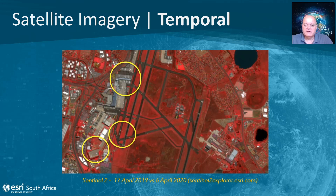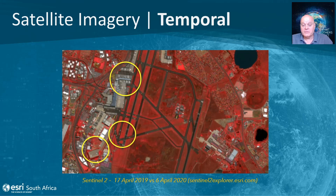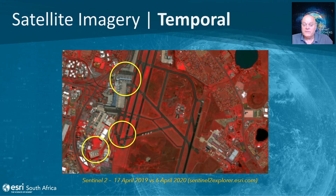Sentinel-2 data is served from the Esri ArcGIS Online Living Atlas of the World web services. You can access it through the Sentinel-2 Explorer tool or bring it directly into ArcGIS Pro. Here I'm showing an image from April last year in false color infrared: you can see planes highlighted in yellow circles at the terminal buildings and waiting at the end of the runway, versus April this year where very few planes are at the terminals and many have been parked, as visible in the yellow circle on the far left.